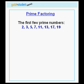The first few prime numbers, those less than 20, are 2, 3, 5, 7, 11, 13, 17, and 19.